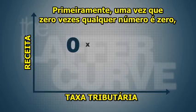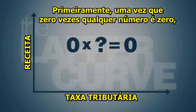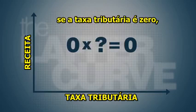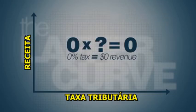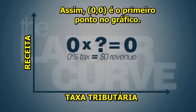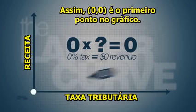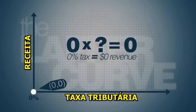First, because zero times any number is zero, if the tax rate is zero, then the government receives zero revenue. Accordingly, zero-zero is our first point on the curve.